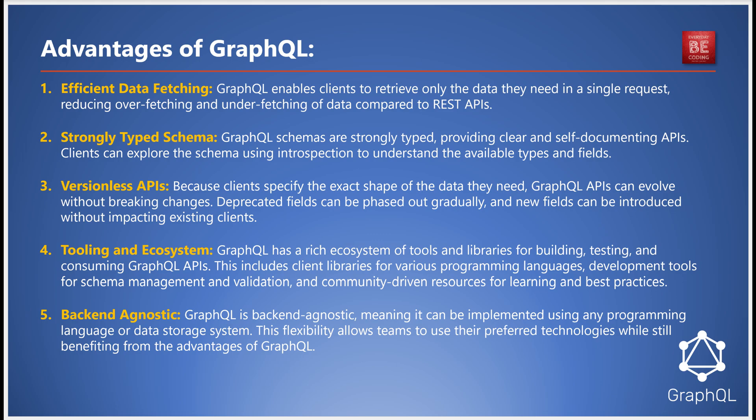Why choose GraphQL? It eliminates both over-fetching and under-fetching of data, making your applications faster and more responsive. Its strongly typed schema acts as a contract between the server and client, providing a clear, self-documenting API. You can explore this schema through introspection, which is like having an interactive API documentation.